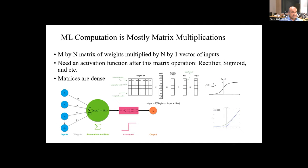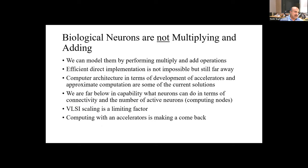We're almost sure that biological neurons are not multiplying and adding — there's no indication of that. We can model it by performing multiply and add operations. A direct implementation is not possible yet. It's probably not going to be completely impossible sometime in the future, but we have major problems in terms of connectivity, number of processors, and heat. If you have billions of processors, you will have a thermal issue. The brain doesn't have that issue. We're also running into the constraints of VLSI scaling, and we are not able to scale using the standard model of scaling.